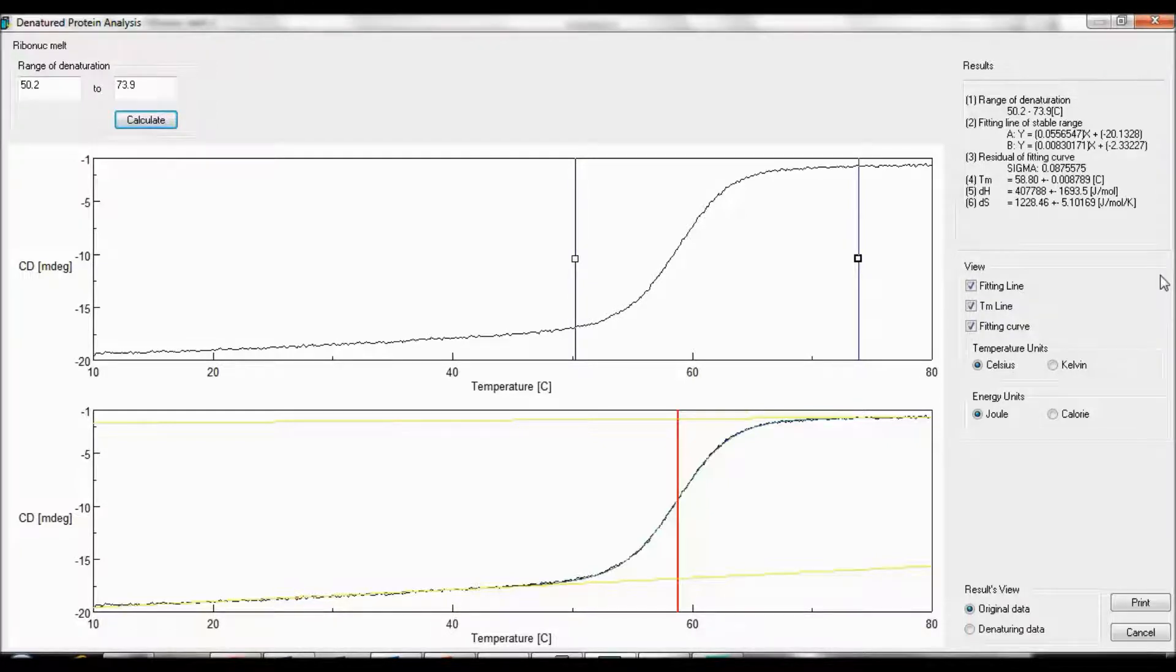The view options allow you to select whether you would like to see the fitting line, the TM line, or the fitting curve, which are all shown on the bottom figure.